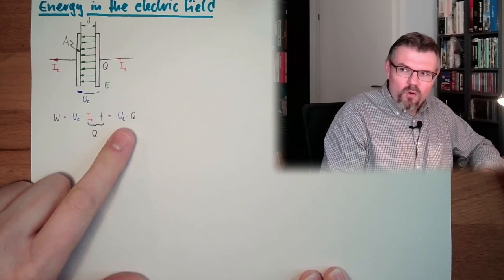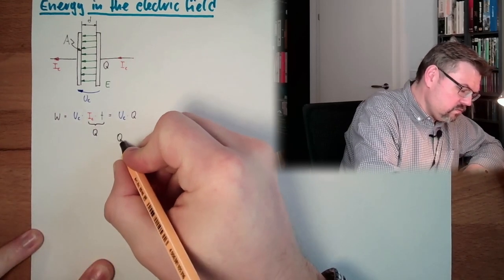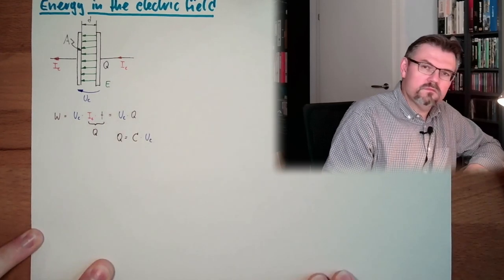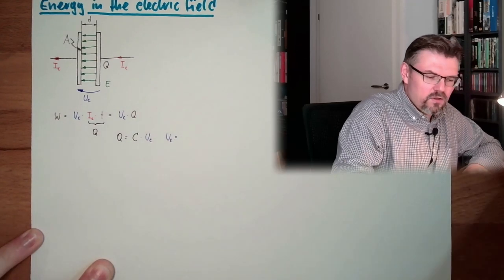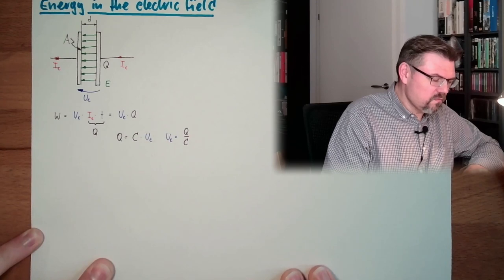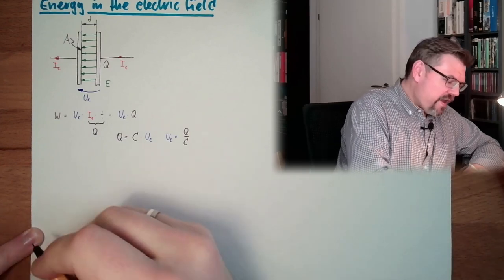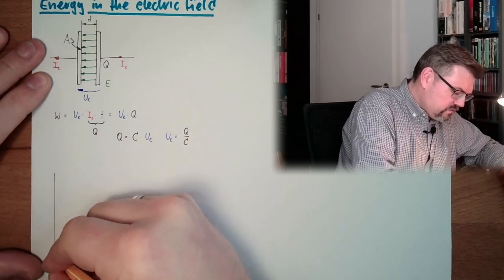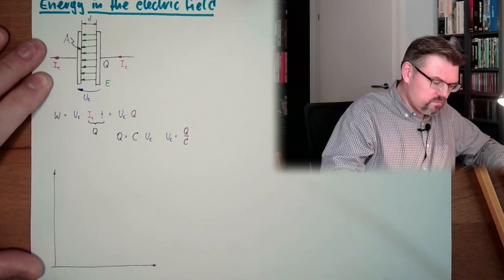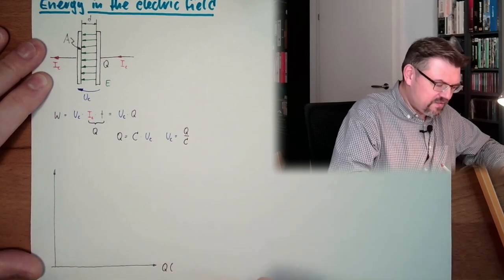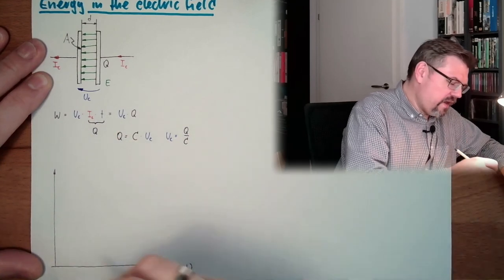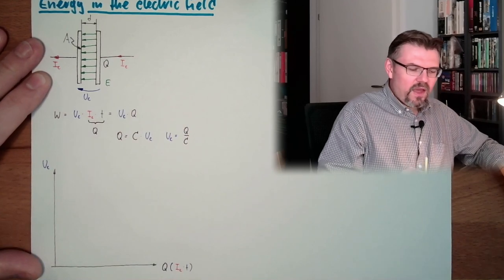And of course we know that this Q equals the capacity multiplied by UC. So actually, UC equals Q divided by C. That's it. Good, so let's think what this is implying. Let's make a chart. Here we have Q, what is actually IC multiplied by T. You know what we realized here. And here we have UC. And now we're thinking.